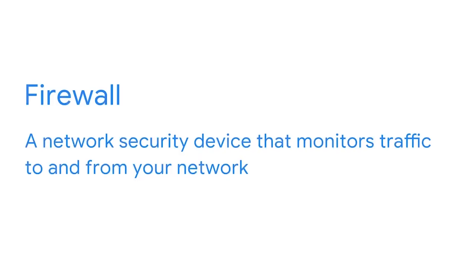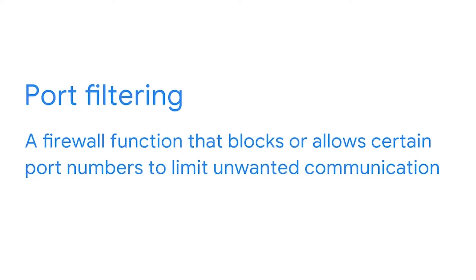A firewall is a network security device that monitors traffic to and from your network. It either allows traffic or blocks it based on a defined set of security rules. A firewall can use port filtering, which blocks or allows certain port numbers to limit unwanted communication.